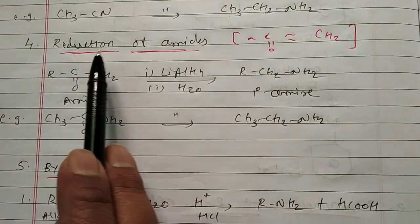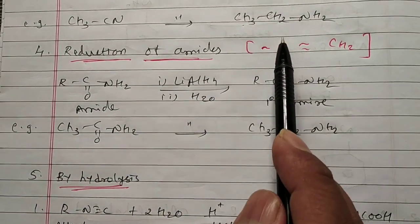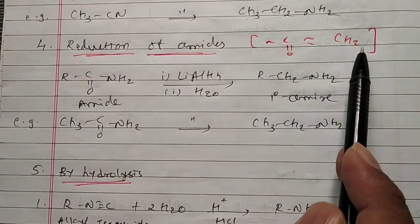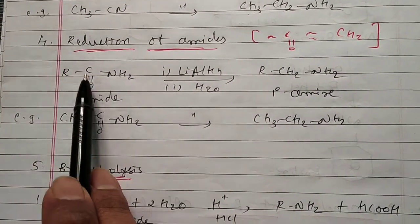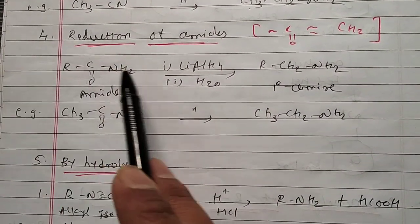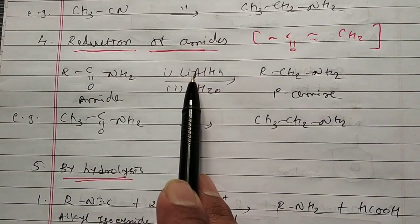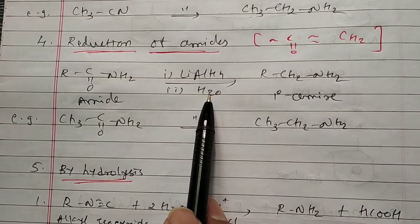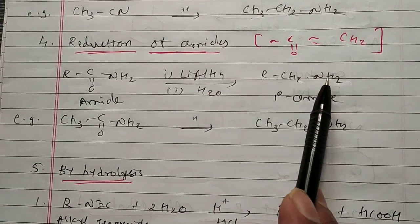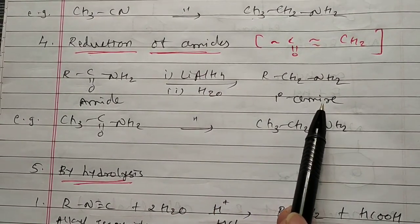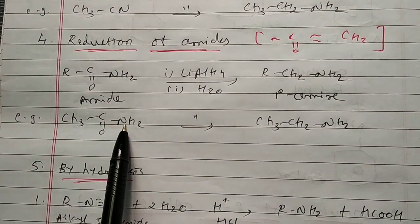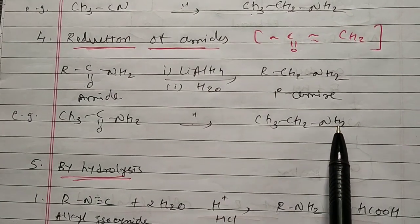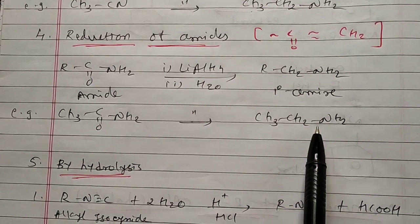Fourth reaction is reduction of amide. Means wherever there is CO, there will be CH2. Carbonyl reduction will occur and you get CH2. R-CO-NH2, that is amide, in the presence of strong reducing reagent LiAlH4, lithium aluminum hydride, on hydrolysis you get R-CH2-NH2, that is primary amine. So CH3-CO-NH2, LiAlH4/H2O, you get CH3-CH2-NH2. So amide to amine, that is reduction of amide.